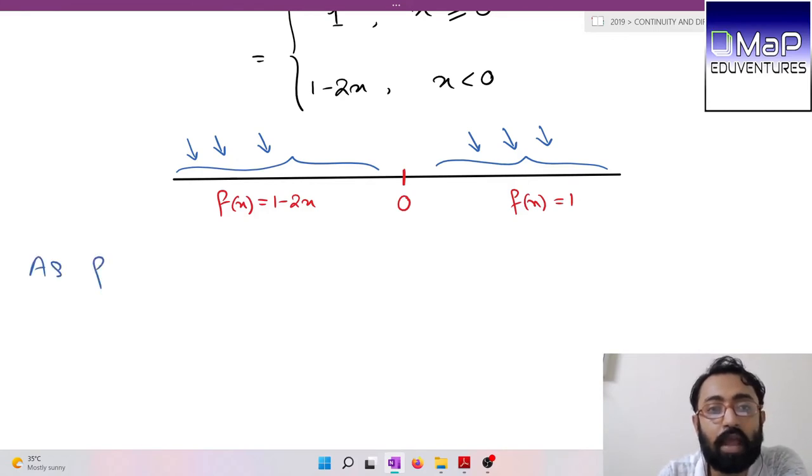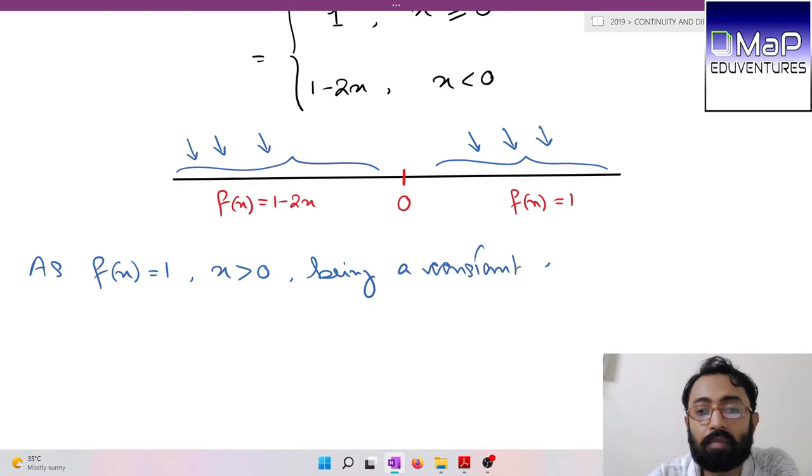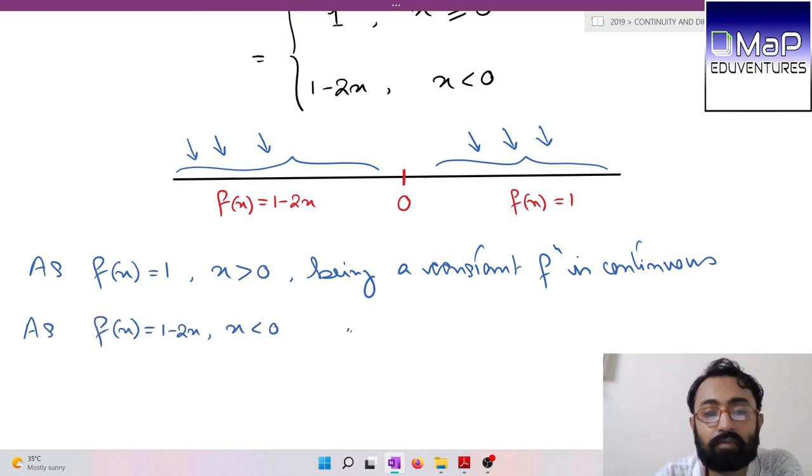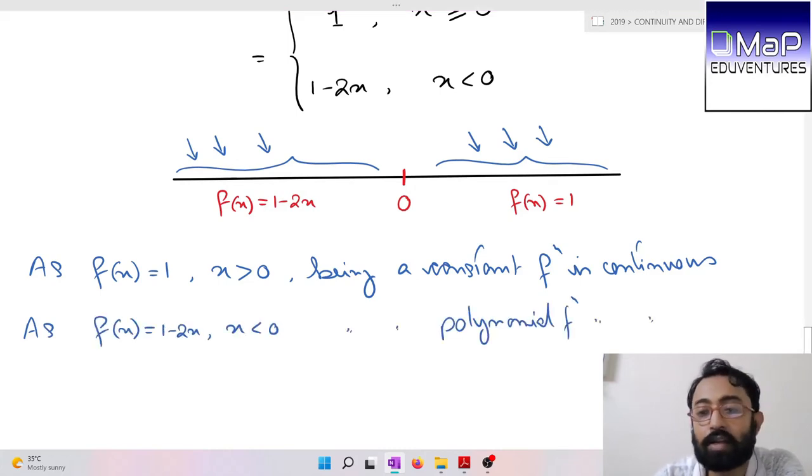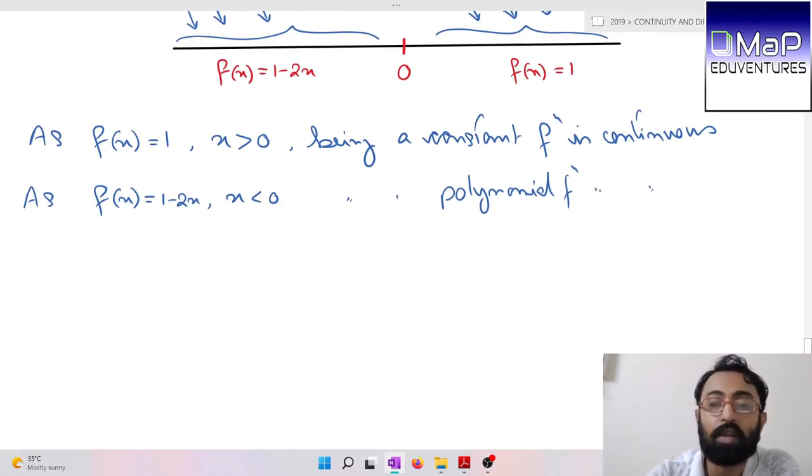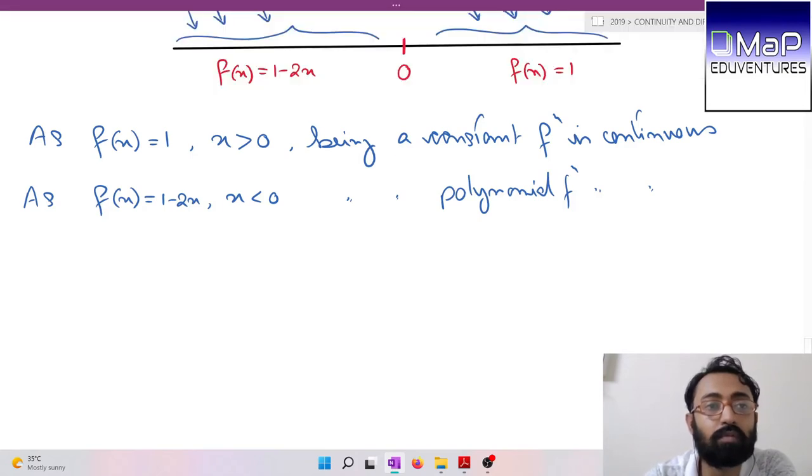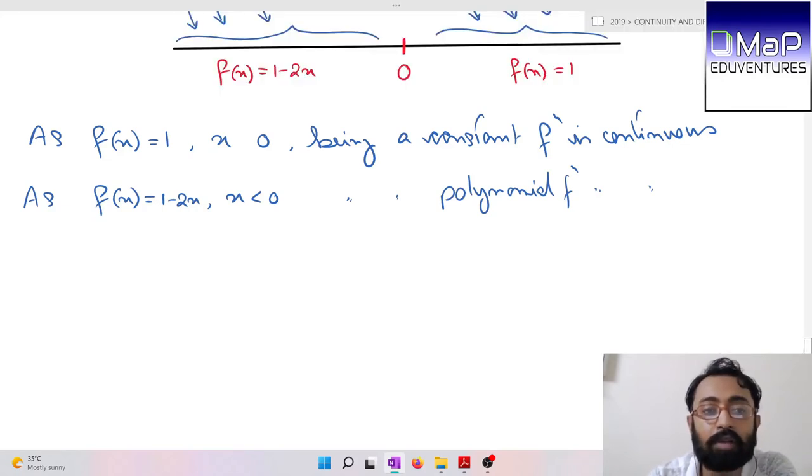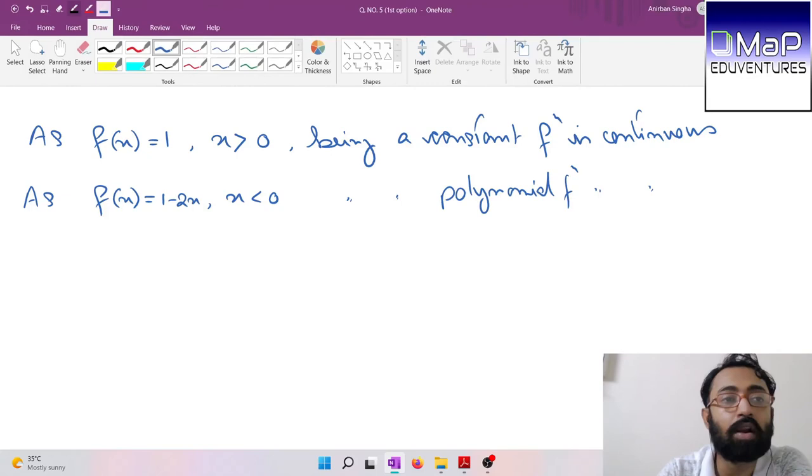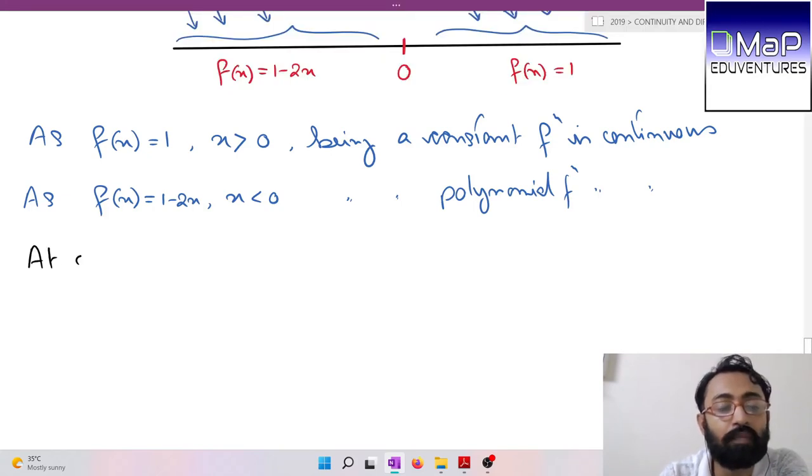We need to check continuity for all real numbers. We can say f(x) = 1 when x > 0, being a constant function, is continuous. Similarly, f(x) = 1 - 2x when x < 0, being a polynomial function, is continuous. But we need to check at x = 0 because that's the breaking point.